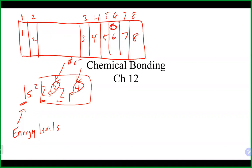The easiest way to figure out valence electrons is equaling the group number. You could also get it from the electron configuration — for something like 1s2, 2s2, 2p4, the electrons at the highest energy level are the valence electrons.